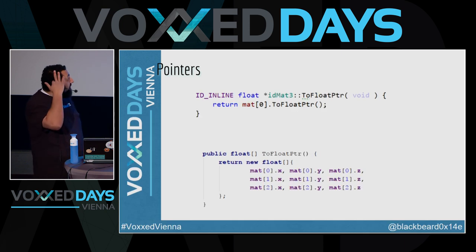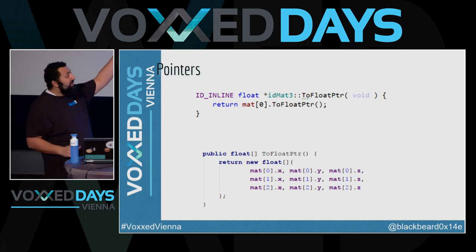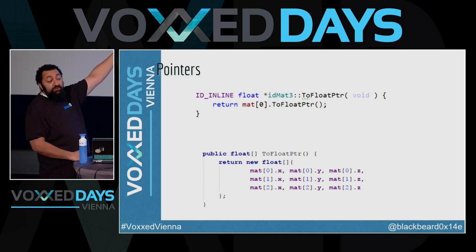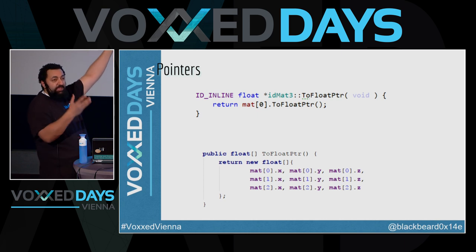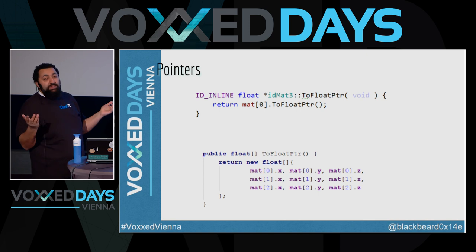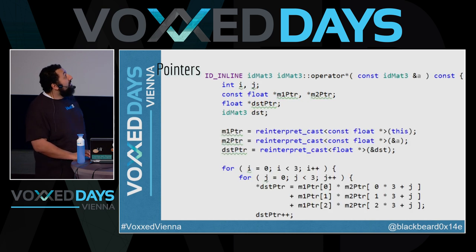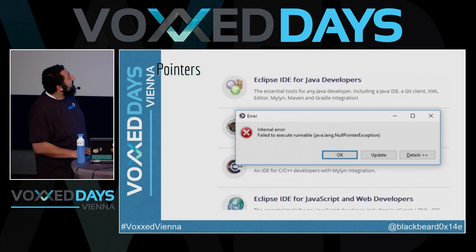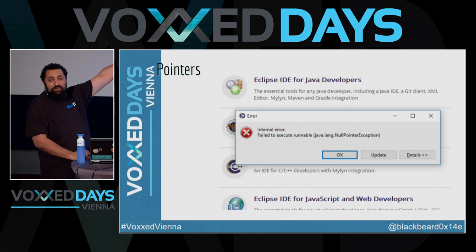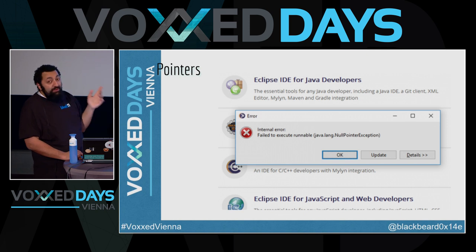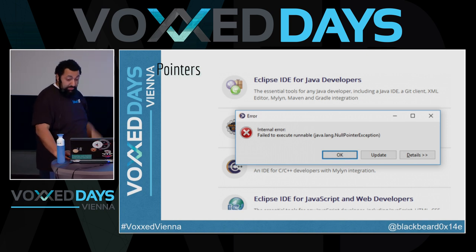Another cool thing with pointers: you can cast stuff to other types. For example, you have a 3x3 matrix and you want a float pointer from it — just cast that address to a float pointer, and you know it's 9 positions (3x3). In Java you have to be creative and do it explicitly. This is important for OpenGL. And this is the only 'pointer' we have in Java — the NullPointerException — which gives you none of the benefits and only the cost. It should really be called NullReferenceException, but that's a different story.